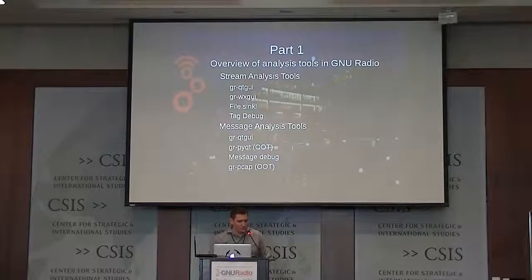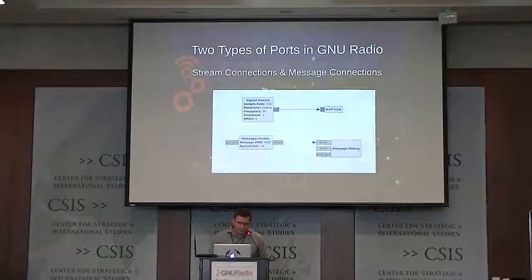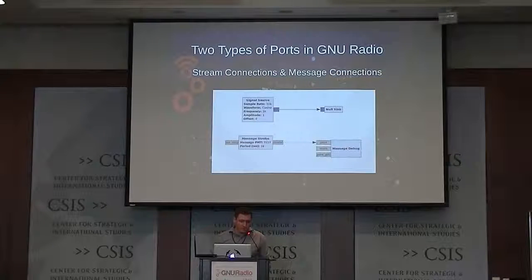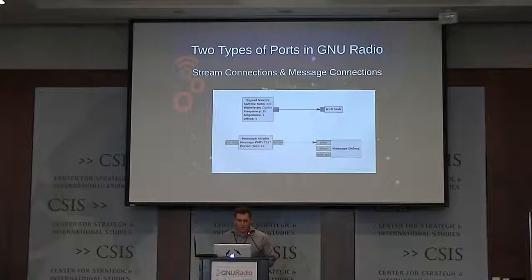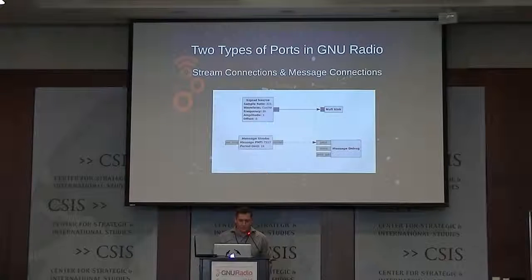There's my out-of-tree debug called GR PyeUT, which is like a parallel set of plotters to do message-based plotting. There's the message debug, which is basically just a print — if a message comes along, you can print it out for diagnostics. And then there's GRPCAP, another out-of-tree module where you can take a message in GNU Radio and write it into a PCAP file, which is very useful if you want to pull something up in Wireshark. Just to clarify: in GRC you've got solid lines which are stream ports — like a sine wave going into a null sink, a continuous stream of samples that keeps flowing. Then there's a message strobe, which produces a single finite message every one second and sends it to a message debug. These are the two primary mechanisms in GNU Radio.